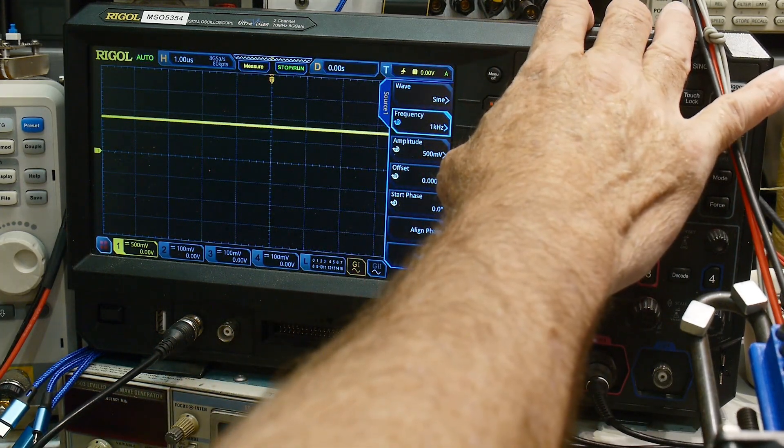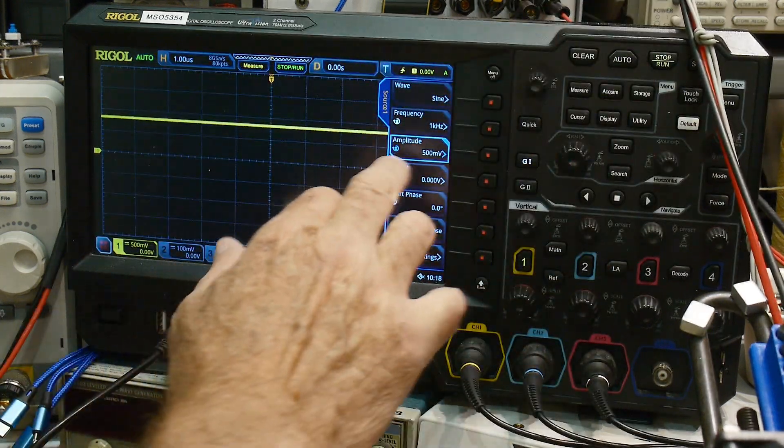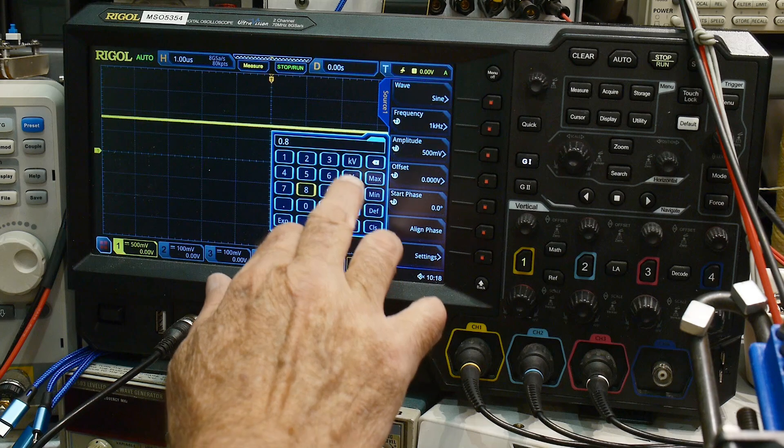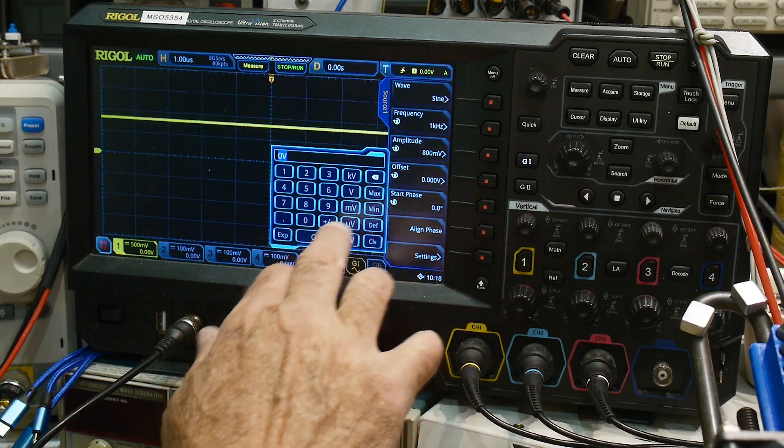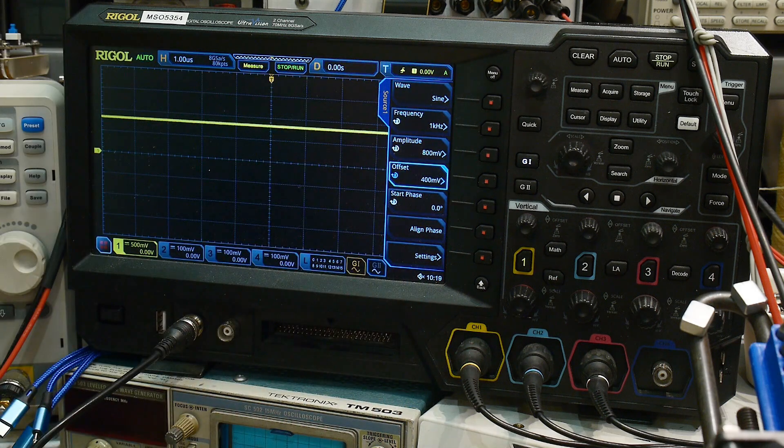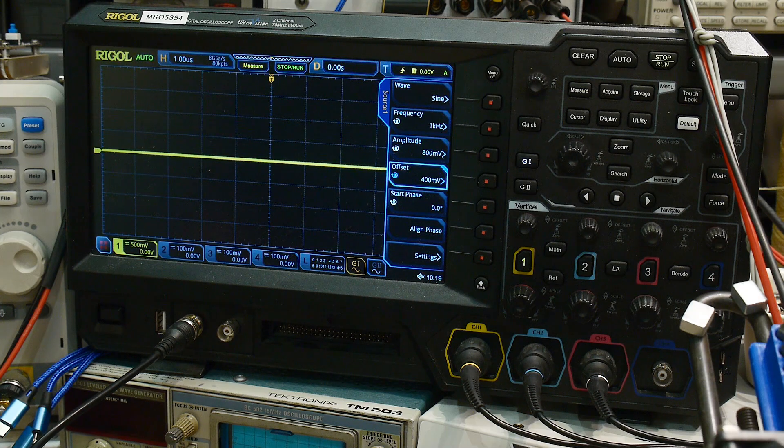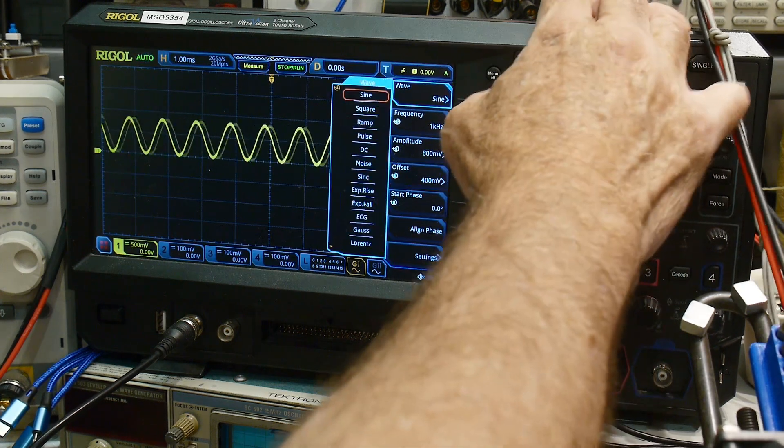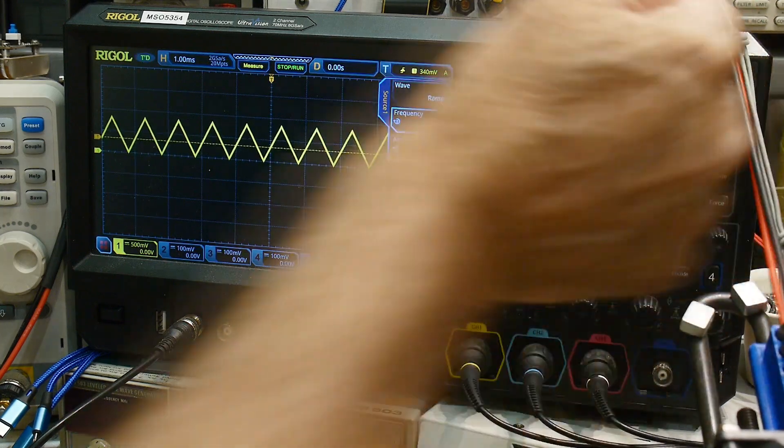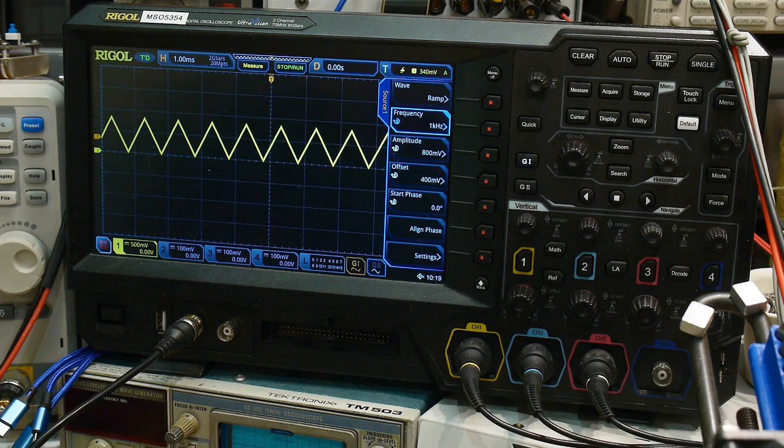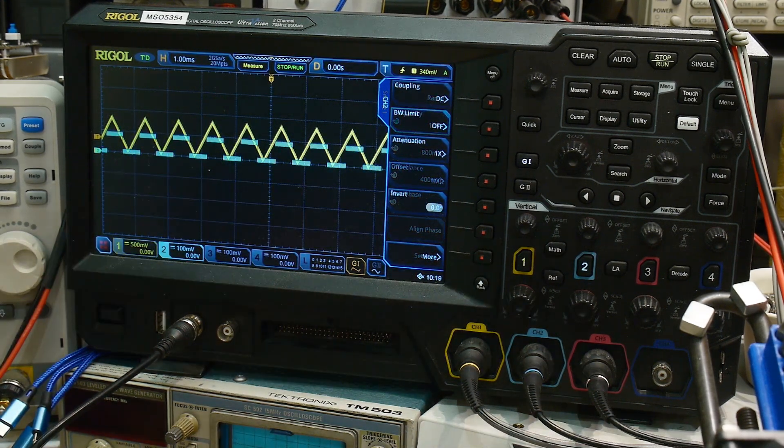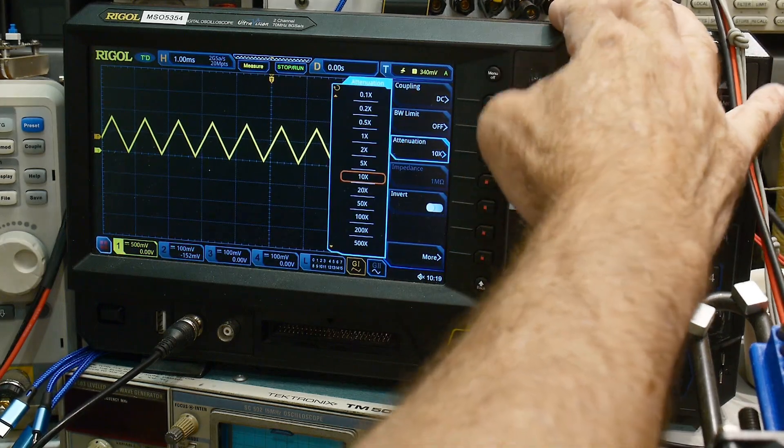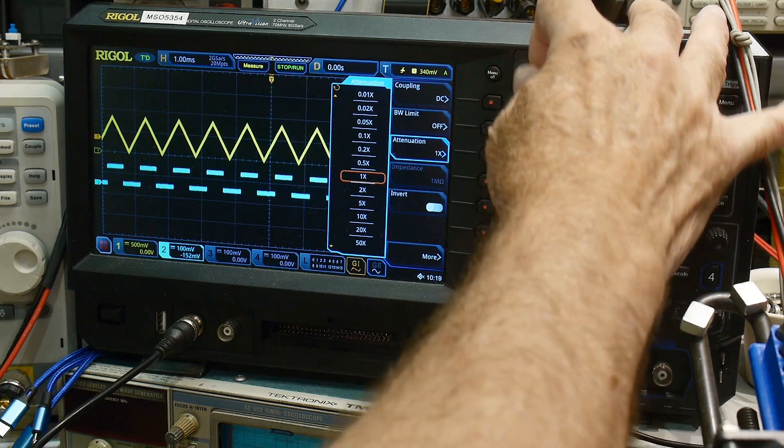Let's see here. Amplitude, we want to do 0.8 volt amplitude and an offset of 0.4 volts. Alright, let's take a look at that. Okay. Let's do a ramp. Let's trigger on that. There we go. So there's our ramp and then let's bring in a channel 2. And yeah, there we go. There's our channel 2 firing. Let's see 2. Let's set that times 10. Yeah, times 10. Let's get them both on the same scale.